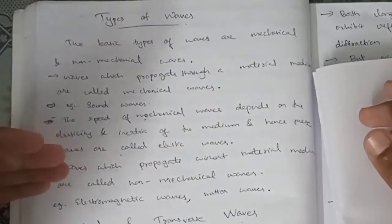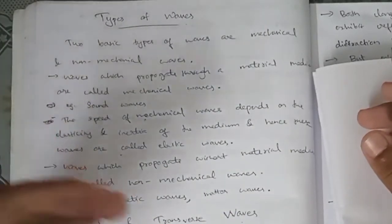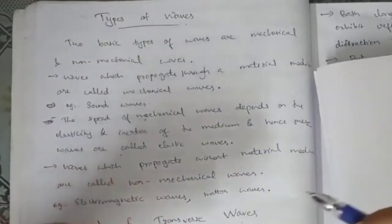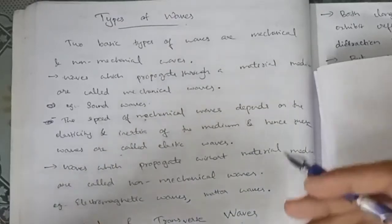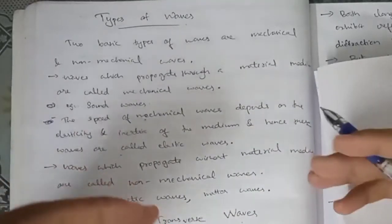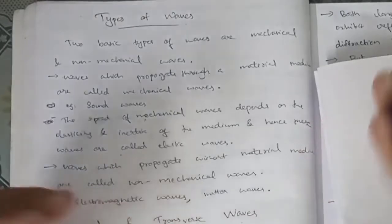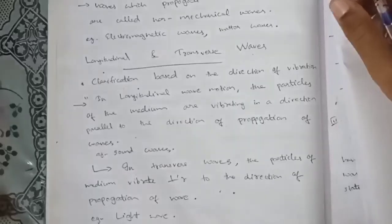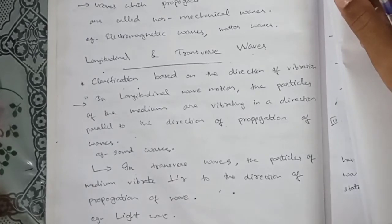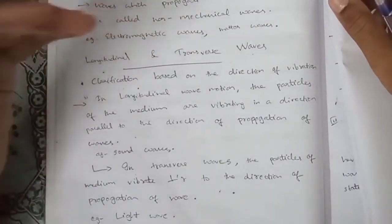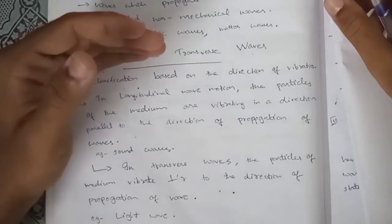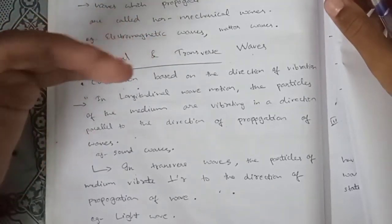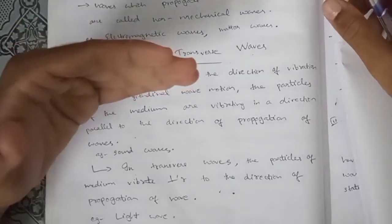Non-mechanical waves are waves which propagate without a material medium. These include electromagnetic waves and gravitational waves.